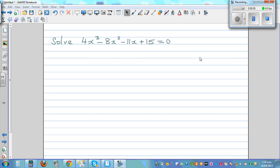Solve 4x cubed minus 8x squared minus 11x plus 15 equal to 0. So we want to solve this. If it's a cubic equation, you will have three values of x.